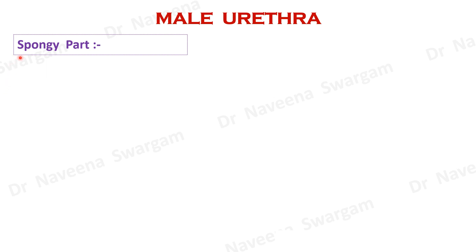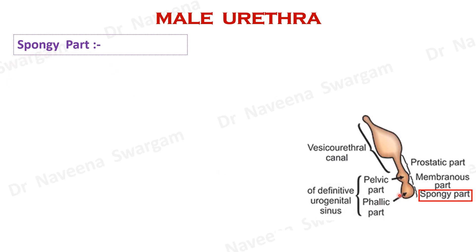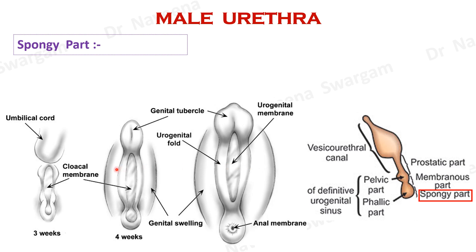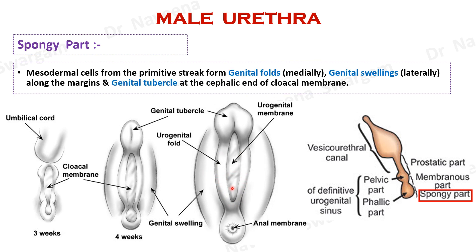Let's see the development of spongy part of male urethra. Most of it develops from endoderm of phallic part of urogenital sinus. The image shows ventral view of cloacal membrane, which is divided into urogenital membrane in front and anal membrane behind. This urogenital membrane is surrounded by migrating mesodermal cells from primitive streak forming genital folds medially and genital swellings laterally. They aggregate at the cephalic end of the urogenital membrane to form genital tubercle, which plays a major role in the development of the spongy part.